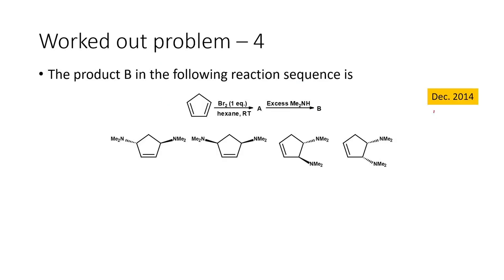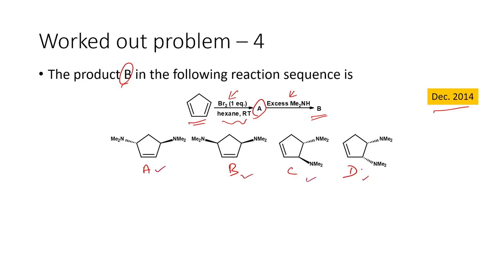Let us move on to the next problem, which appeared in December 2014. Here the product B in the following reaction sequence — cyclopentadiene is the starting material, treated with one equivalent of bromine in hexane at room temperature (step one, giving intermediate A), then this intermediate is treated with excess dimethylamine to give the final product B. We have to identify from four options what is going to be the major product.